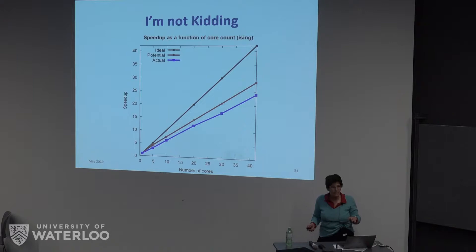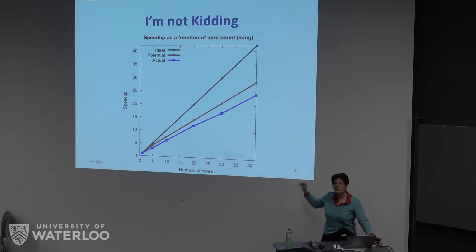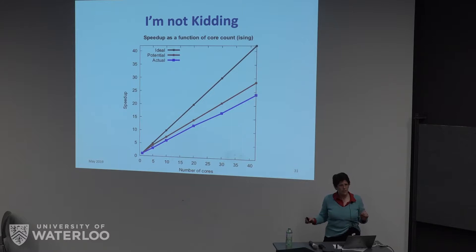To convince you I'm not kidding — this is a real live implementation. The black line shows ideal scaling. The red line shows what you'd get with perfect predictions given implementation overheads. The blue line is what we actually get. On 44 cores, we essentially get a speedup of over 25 with zero programmer effort, which is pretty darn cool.